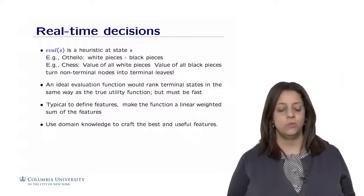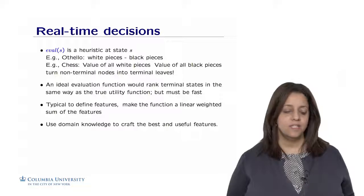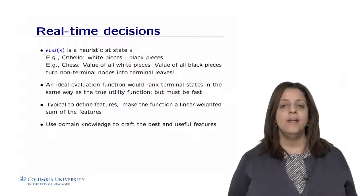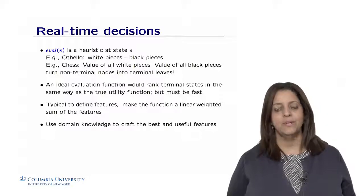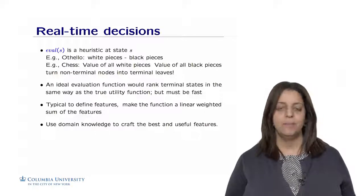Eval of s for some state s is actually a heuristic function that could be used based on domain knowledge. For example, for Othello, we could take the difference between the white pieces and the black pieces. For chess, we could take the difference between the value of the white pieces versus the value of the black pieces, which will actually turn non-terminal nodes into terminal leaves, which is great. So we can stop the search earlier rather than going all the way down into a depth of 100.